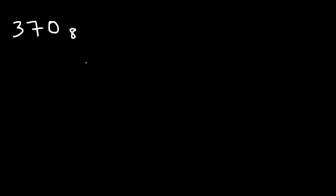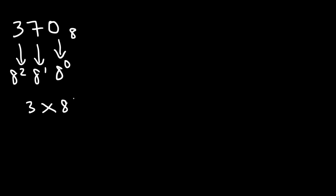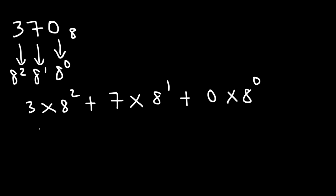Let's say we have 370 in the octal system. What we're going to do is multiply the 0 by 8 to the 0 power, then multiply the 7 by 8 to the first power, and the 3 by 8 to the second power, and add up all these numbers. So this is going to be 3 times 8 squared plus 7 times 8 to the first power plus 0 times 8 to the 0 power.